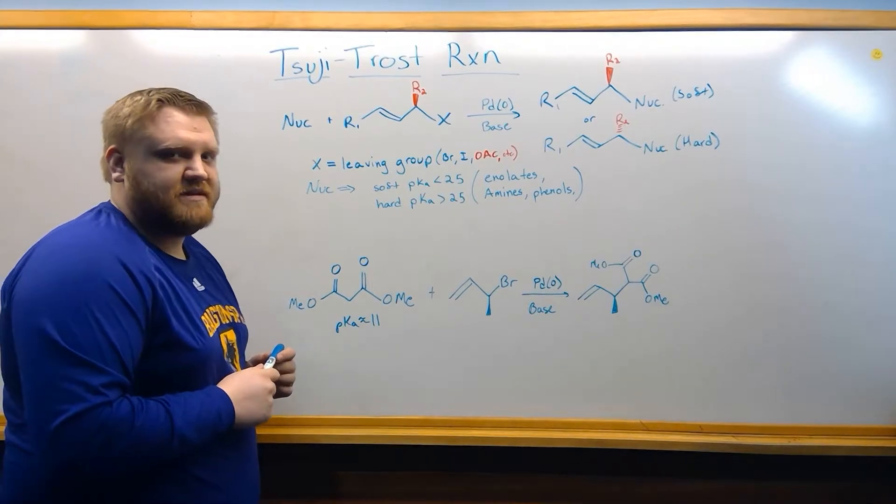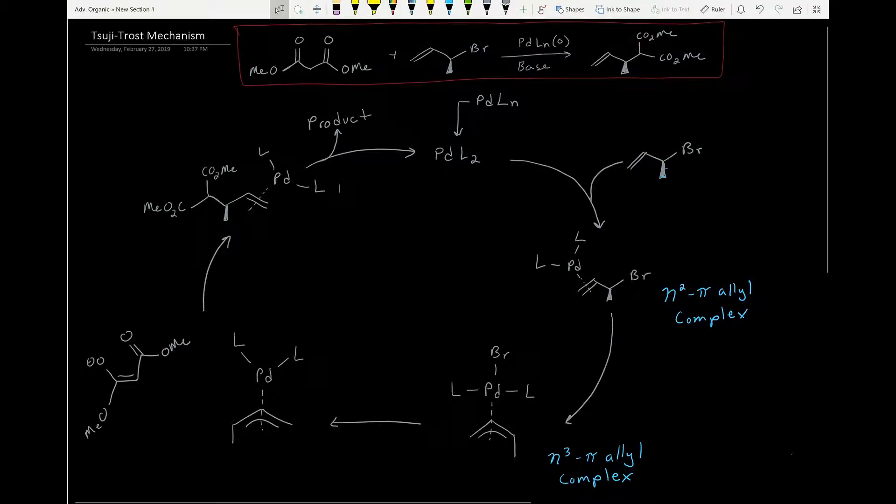Let's take a look at the mechanism. Here's our Tsuji-Trost mechanism. We have our reaction from before, and we're going to start here with our palladium catalyst. It's going to do a couple dissociations to get down to only two ligands here, and it's going to have an oxidation state of zero.